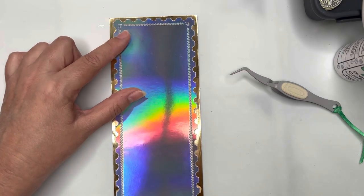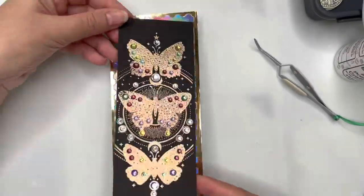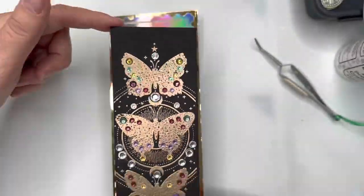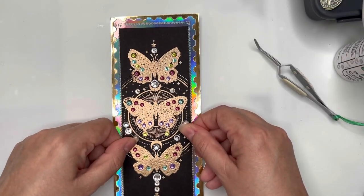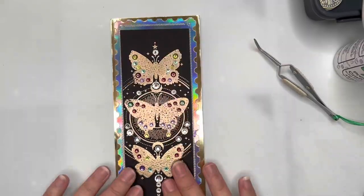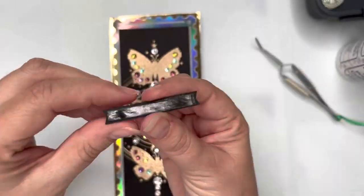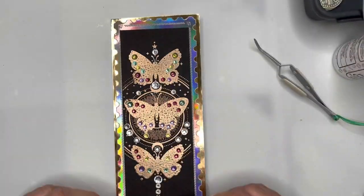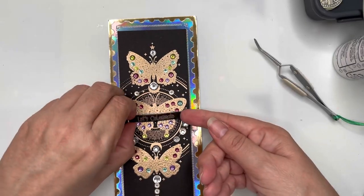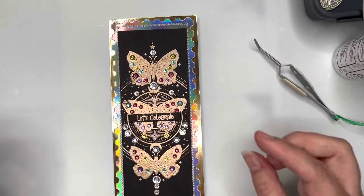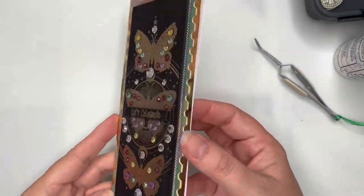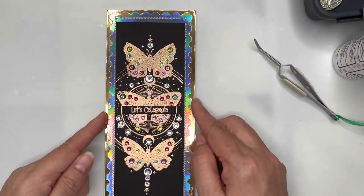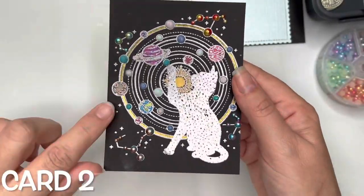I've used that beautiful iridescent foiled card. I've got the butterfly image all heat embossed and decorated with gems. That's popped up on some foam tape. I'm simply going to add a sentiment across the middle and that finishes off the card. It's very simple, easy to have decorated and ready to go.